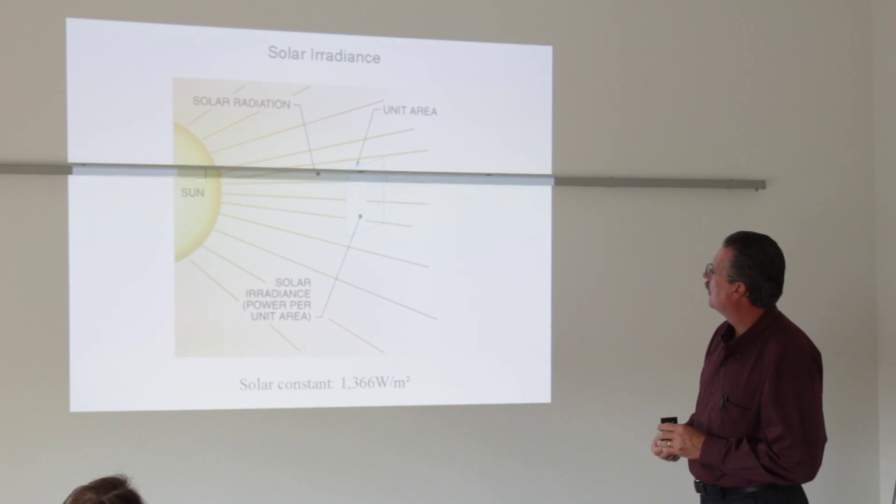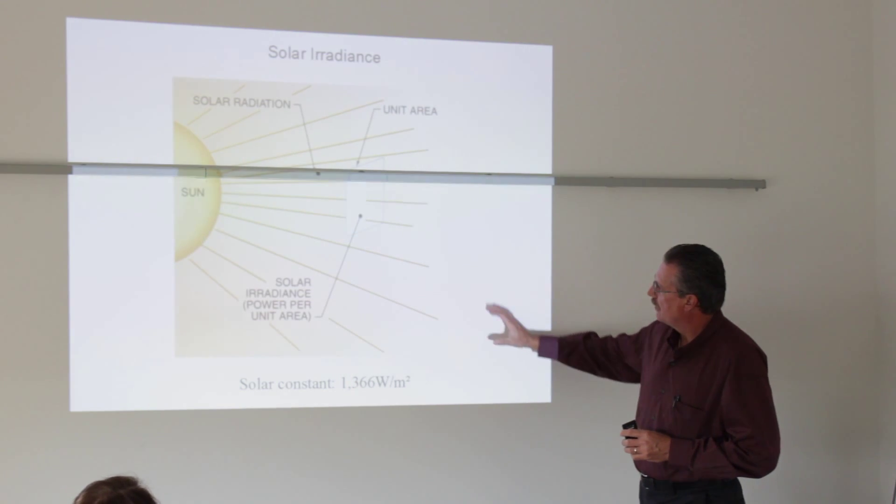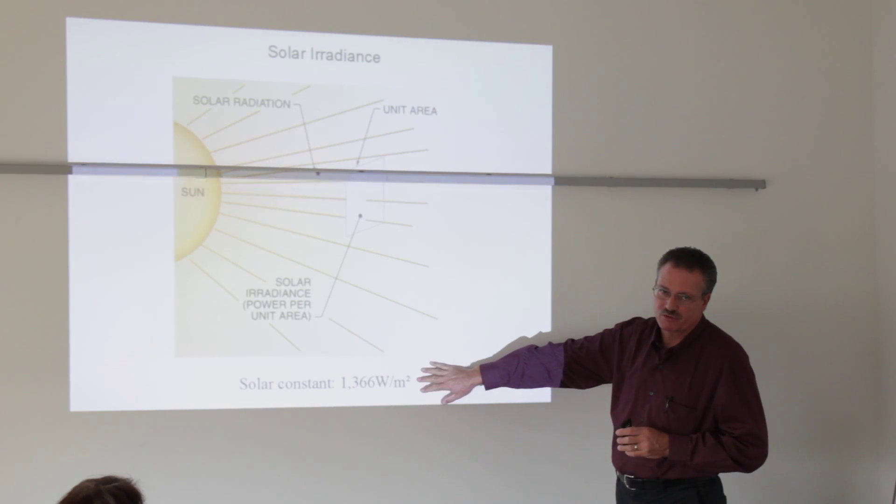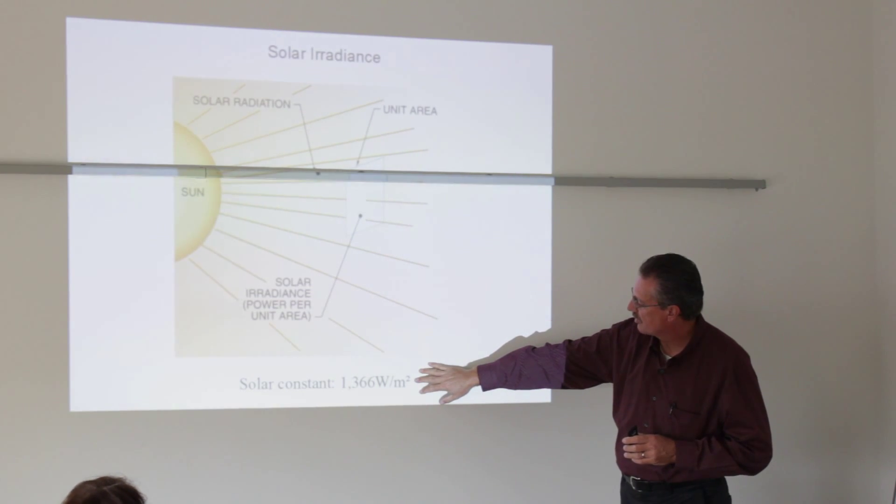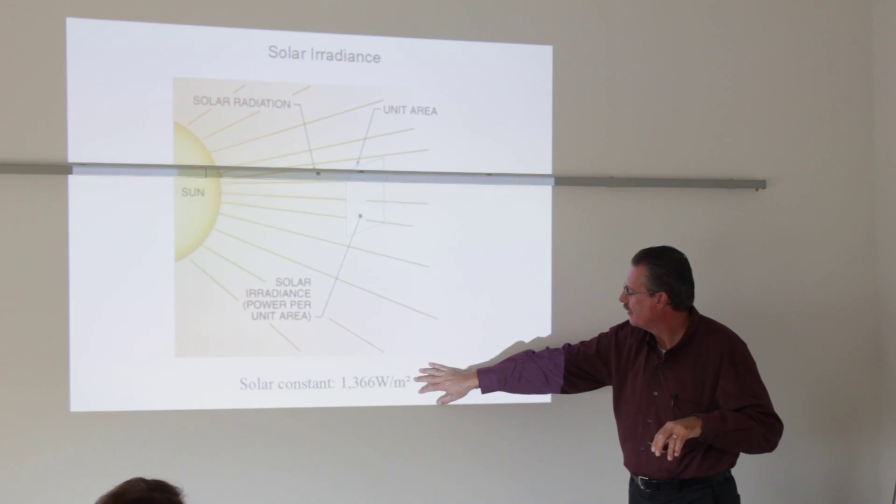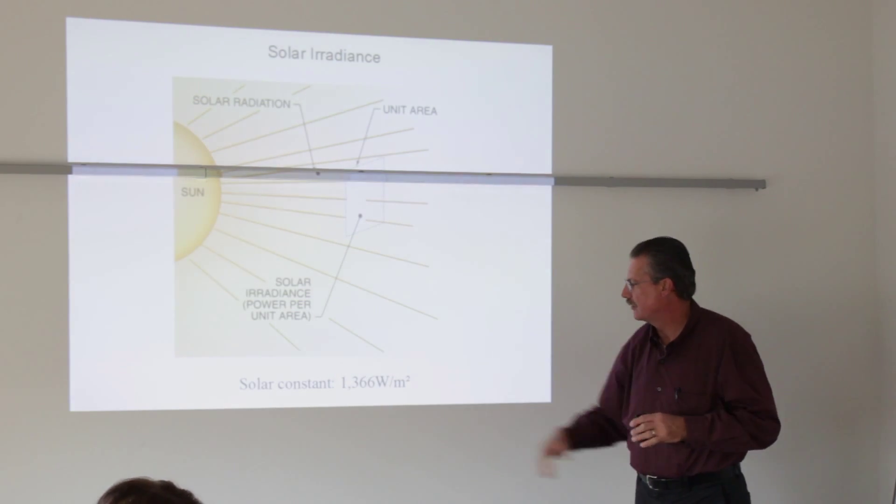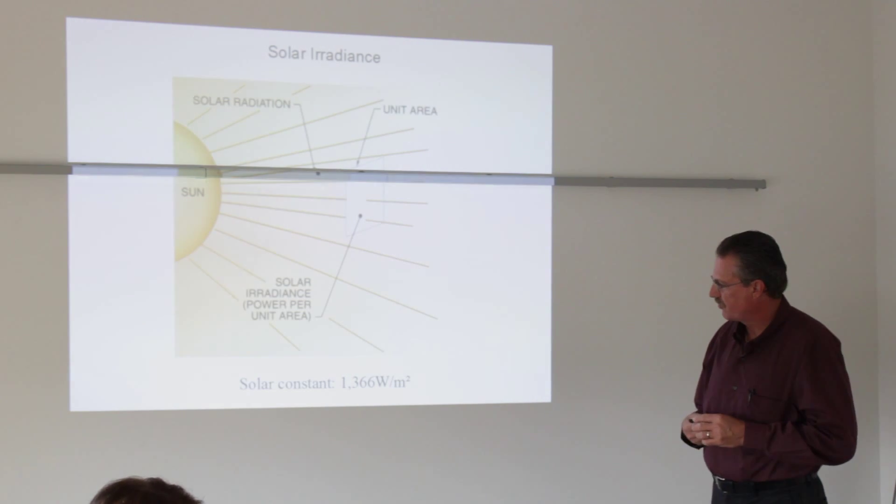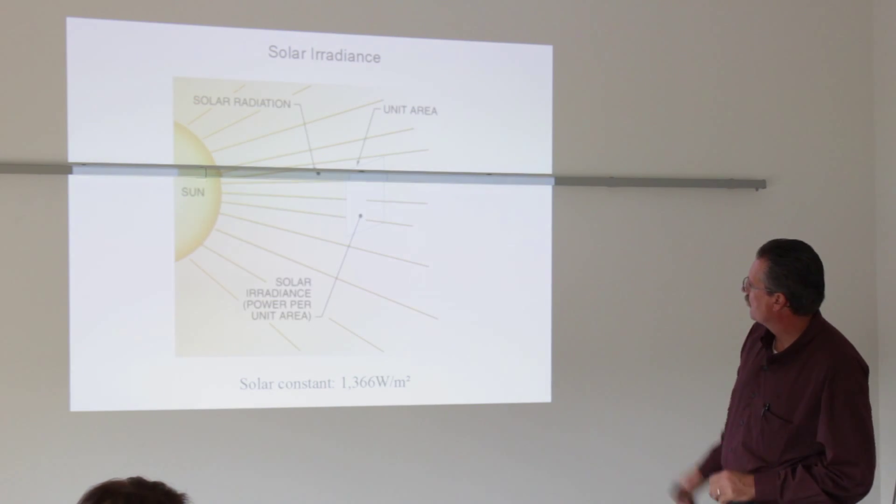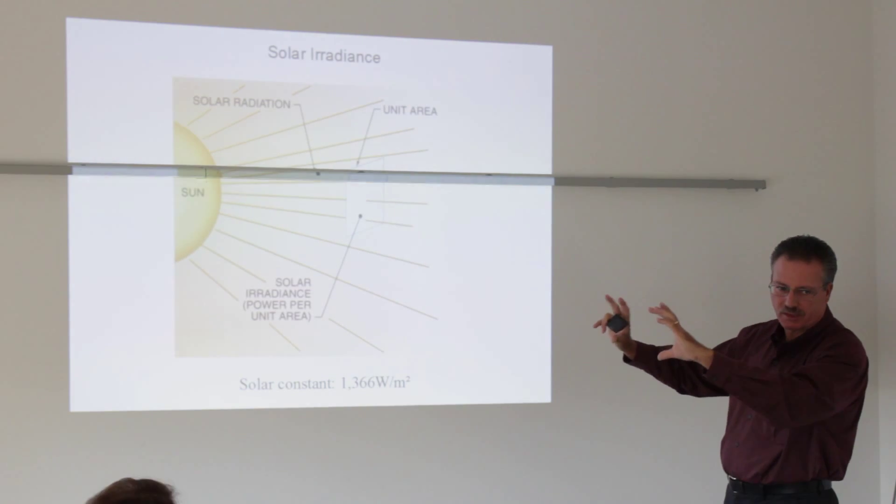All right, here's the fun part. Real basic things. The sun radiates the equivalent energy of, in space, which is called a solar constant, at 1,366 watts per square meter. A square meter for us U.S. folks is roughly 10 square feet. Nice and simple round numbers. And that is energy available in a unit area.